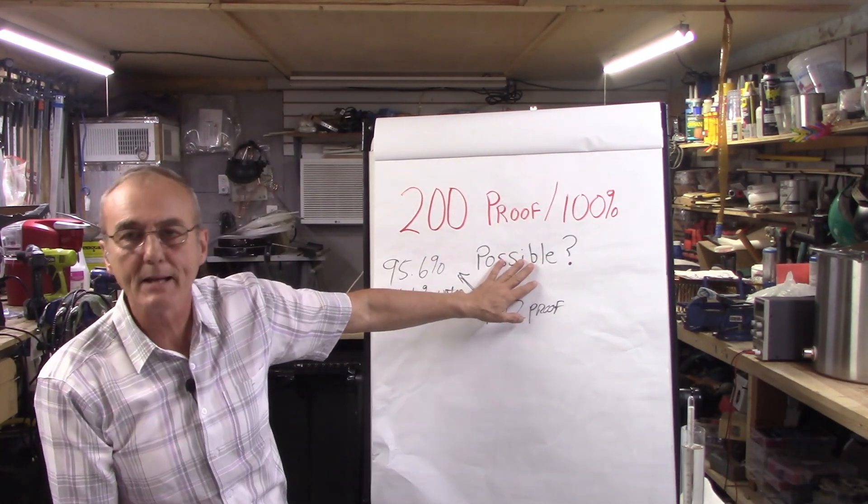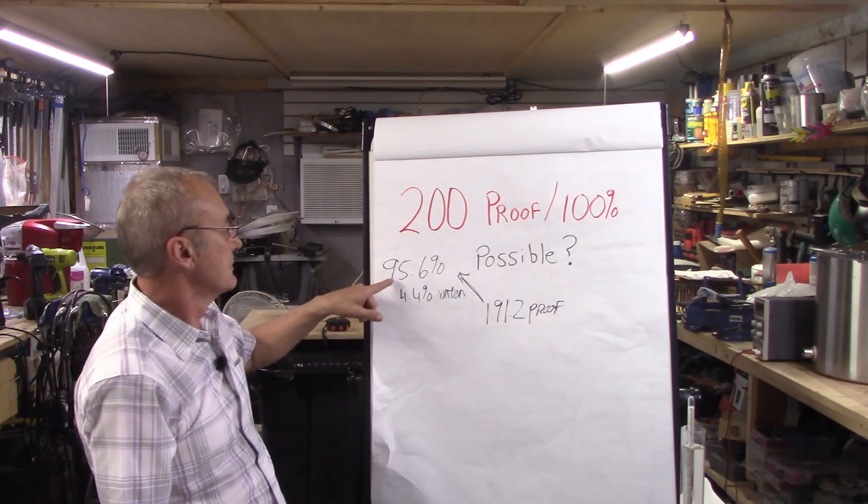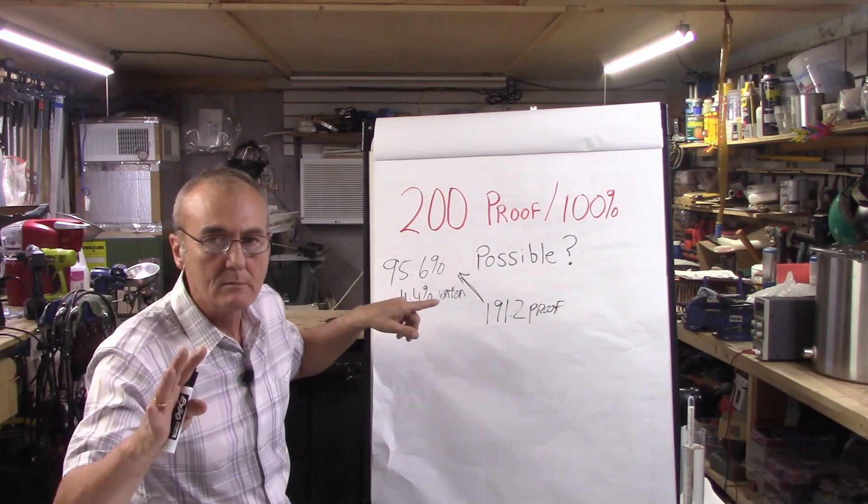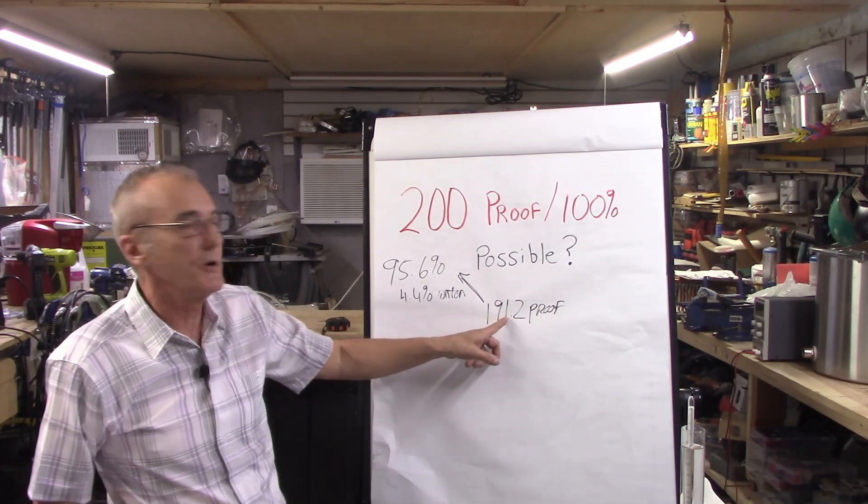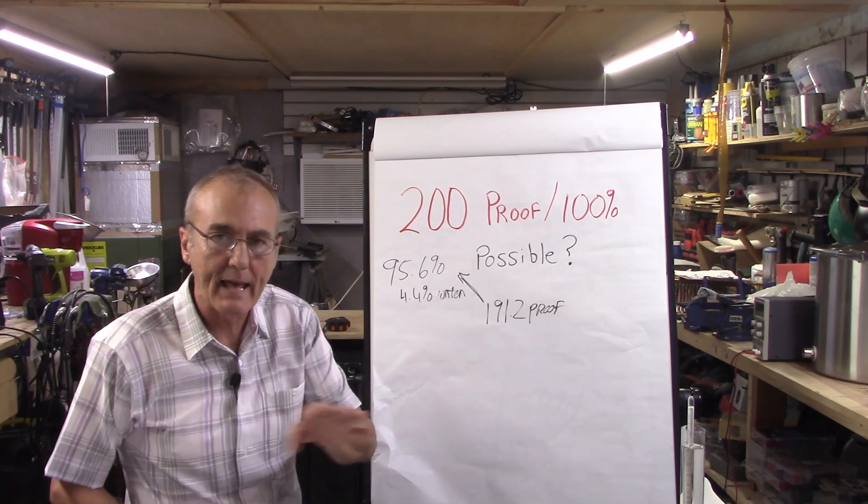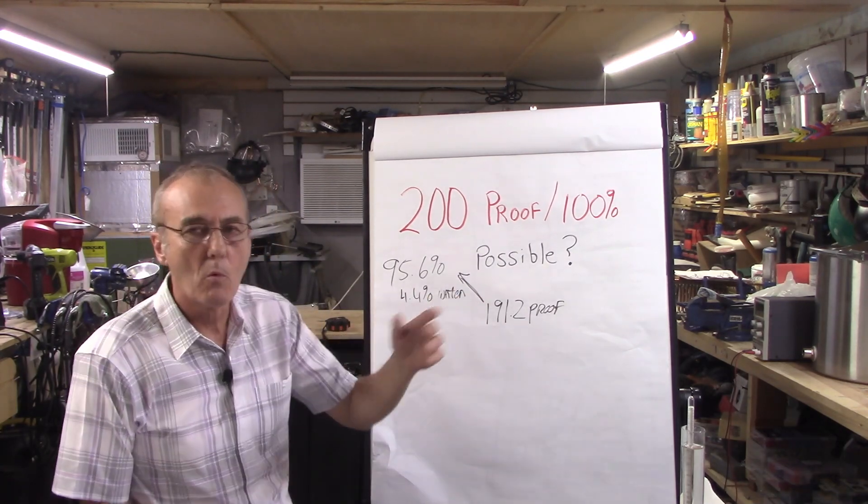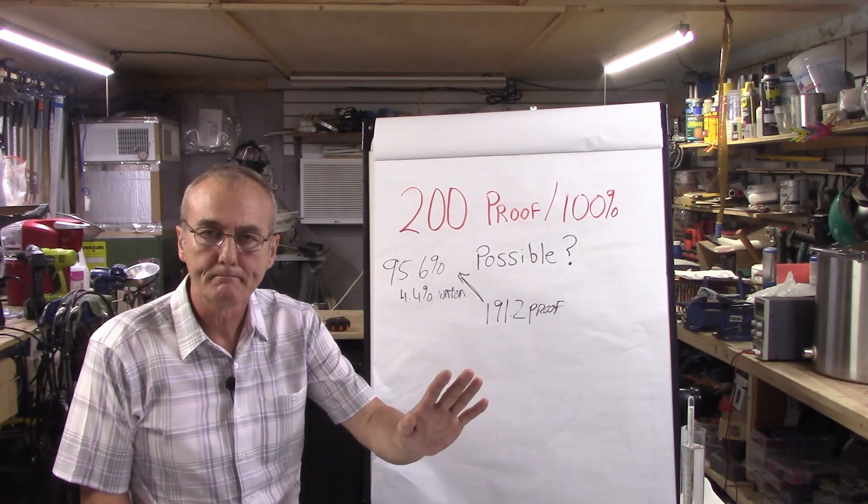Okay, what we asked is: 200 proof, 100% alcohol by volume, is it possible? Well, the answer is yes and no. Your limit, if everything works perfect, is 95.6% alcohol by volume, which is 191.2 proof.